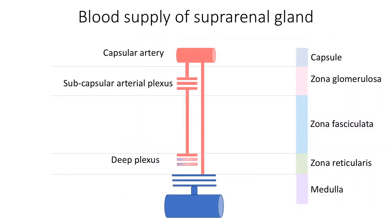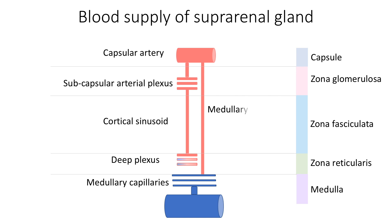Blood supply of the suprarenal gland shows three interesting features. First, the suprarenal gland forms a site of a portal system due to the presence of two sets of capillaries: cortical sinusoidal capillaries traversing zona fasciculata connecting the subcapsular plexus with the deep plexus in zona reticularis, and medullary capillaries in the medulla. Second, the medullary capillaries receive dual blood supply — direct arterial blood from medullary arterioles as well as venous blood from the deep plexus in zona reticularis. Lastly, the central adenomedullary veins show a thick tunica media due to longitudinally running smooth muscle fibers.